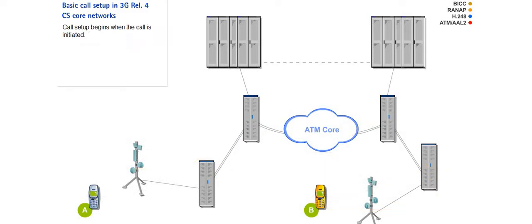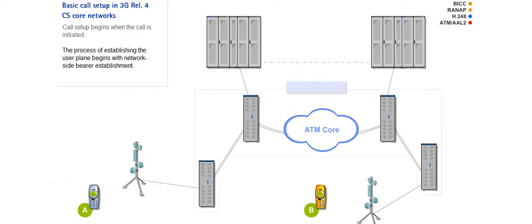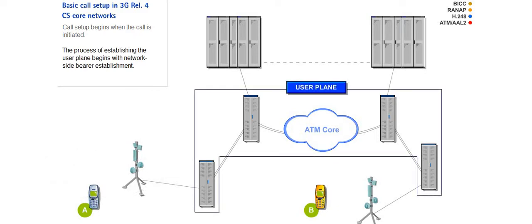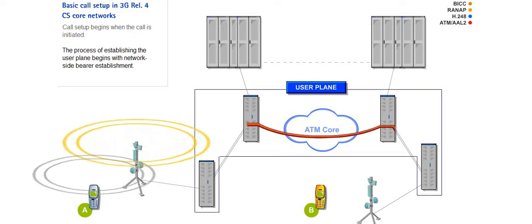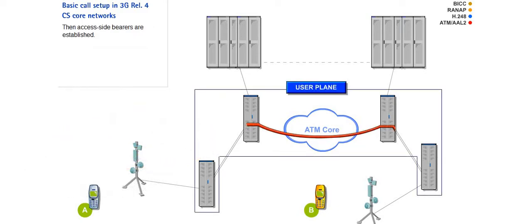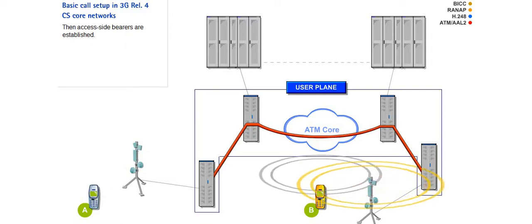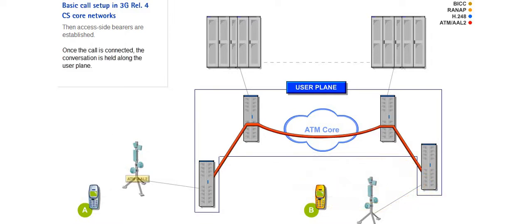Call setup begins when the call is initiated. The process of establishing the user plane begins with network side bearer establishment. Then access side bearers are established. Once the call is connected, the conversation is held along the user plane.